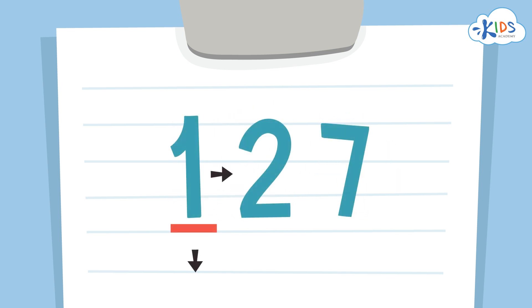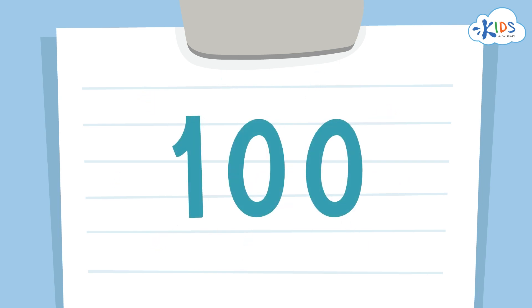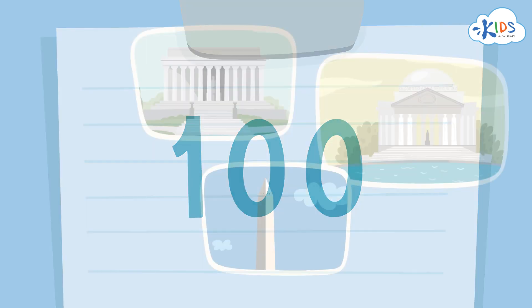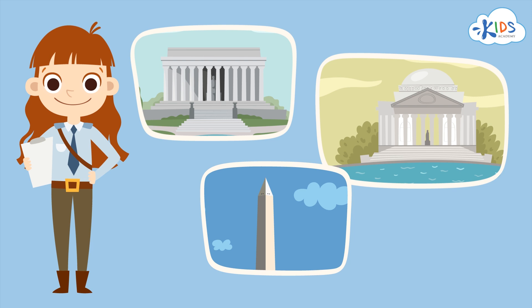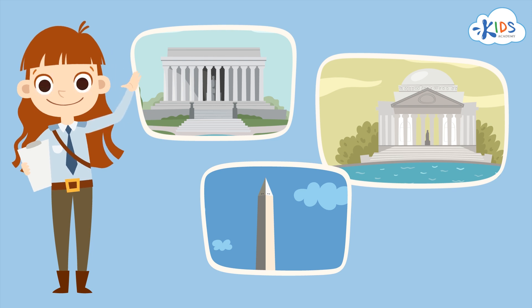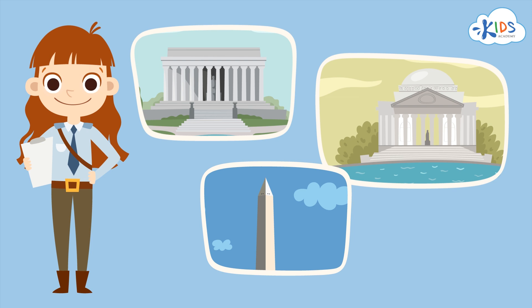You round the number in the hundreds place and make the numbers in the ones and the tens places zeros. Let's take a look at a real-life situation that requires rounding and see how our rounding to the nearest hundred skills can come in handy. This park ranger wants to record how many people visited these landmarks by rounding to the nearest hundred. Let's help her by rounding.